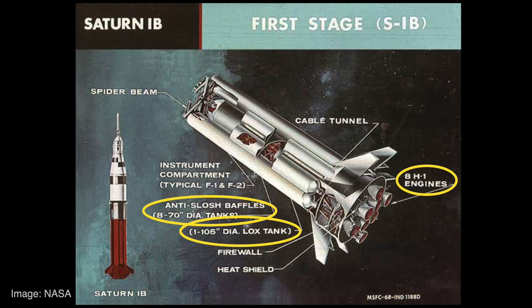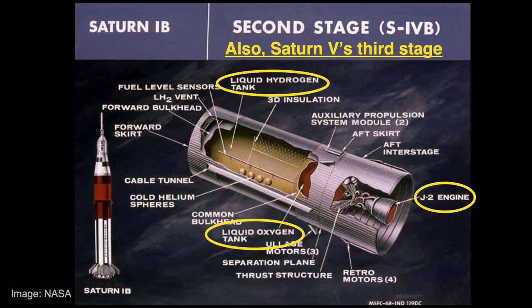The first stage of the Saturn 1B had eight engines and used Rocket Propellant 1, or RP-1 — a form of kerosene — as fuel, with liquid oxygen as oxidizer. Rocket stages primarily consist of tanks and engines, but there are other important components such as baffles to stop the liquid from sloshing. The second stage of the Saturn 1B had one engine; while the oxidizer was again liquid oxygen, the fuel was liquid hydrogen instead of RP-1. Note that the Saturn 1B's second stage was also the third stage of the Saturn V rocket — in Apollo mission audio and transcripts, this is often referred to as the S4B.